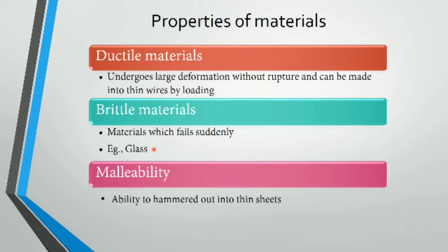Brittle materials fail suddenly without significant deformation. An example is glass. Malleable materials can be beaten into thin sheets. Ductility relates to thin wires, while malleability relates to thin sheets and plates.